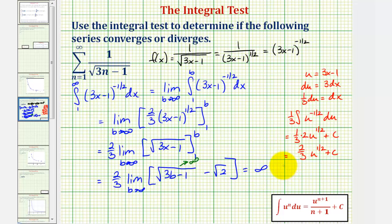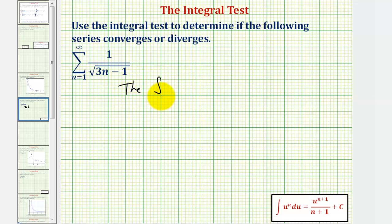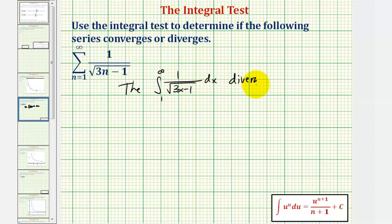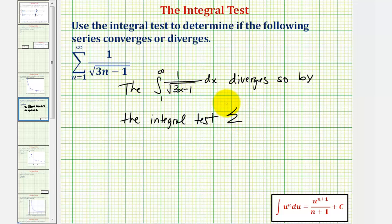This means the integral diverges and so does our infinite series. To summarize: the integral from one to infinity of one divided by the square root of three x minus one, integrated with respect to x, diverges. So, by the integral test, our infinite series also diverges.